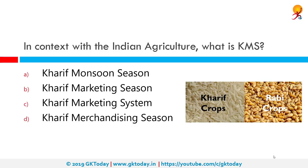In the context of Indian agriculture, what is KMS? KMS is Kharif Marketing Season. Indian cropping seasons are classified into two main seasons based on the monsoon: Kharif and Rabi. The Kharif cropping season runs from July to October during the southwest monsoon, and the Rabi cropping season runs from October to March. Kharif crops are classified as summer crops and Rabi as winter crops.